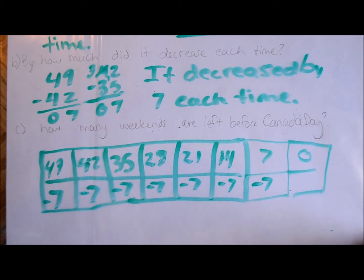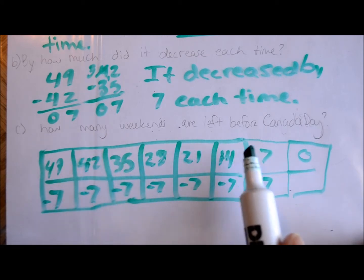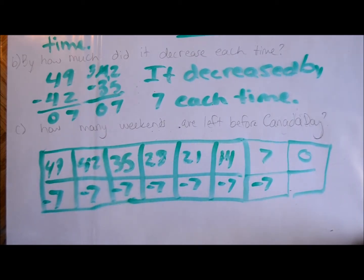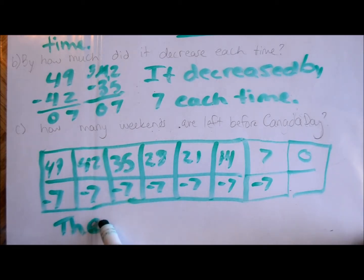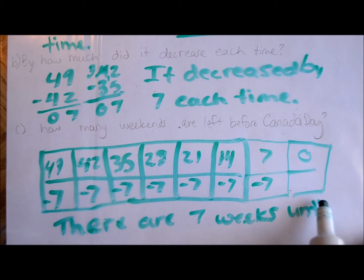You can't subtract 7 from 0 — well, not with this pattern today. So how many weeks were left? Counting the steps: one, two, three, four, five, six, seven. Seven weeks till Canada Day. There are seven weeks until Canada Day.